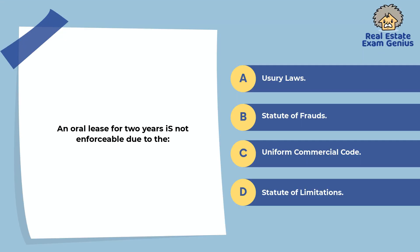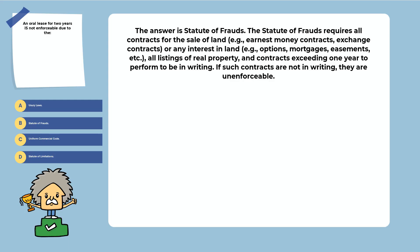An oral lease for two years is not enforceable due to the: usury laws, statute of frauds, uniform commercial code, or statute of limitations. The answer is the statute of frauds. The statute of frauds requires all contracts for the sale of land or any interest in land, all listings of real property, and contracts exceeding one year to perform to be in writing. If such contracts are not in writing, they are unenforceable.